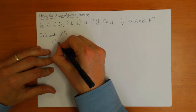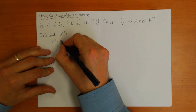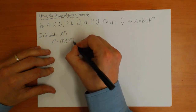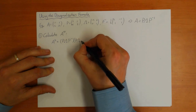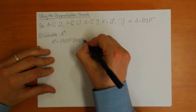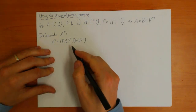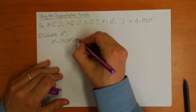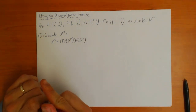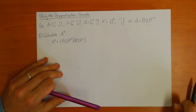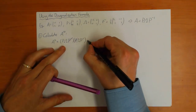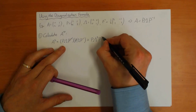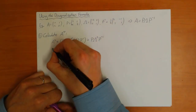To show you how it works, suppose I want to calculate A squared. Using the diagonalization formula, A squared is P Lambda P-inverse times P Lambda P-inverse. But here the P and P-inverse in the middle cancel — the inverse matrices cancel — and Lambda times Lambda just gives you Lambda squared. So A squared equals P times Lambda squared times P-inverse.